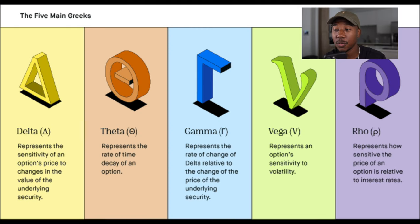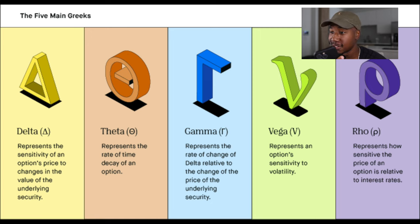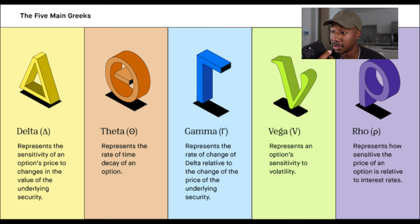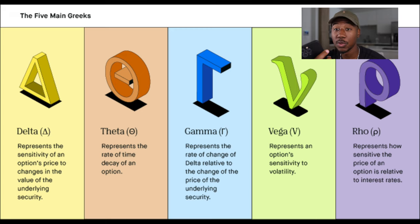Delta represents the sensitivity of an option's price to changes in the value of the underlying asset. Theta represents the rate of time decay on an option. Gamma represents the rate of change of delta relative to the change in price of the underlying security. Vega represents an option's sensitivity to volatility, and Rho represents how sensitive the price of an option is relative to interest rates.